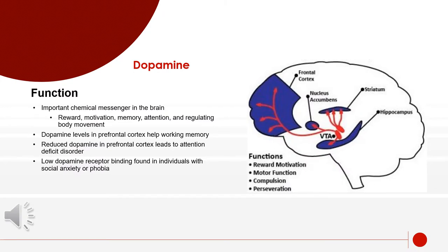Important functions of dopamine include that it is a chemical messenger in the brain involved with reward, motivation, memory, attention, and regulating body movement. Dopamine levels in the prefrontal cortex help working memory. Reduced dopamine in the prefrontal cortex leads to attention deficit disorder, and low dopamine receptor binding is found within individuals that have social anxiety or phobia.